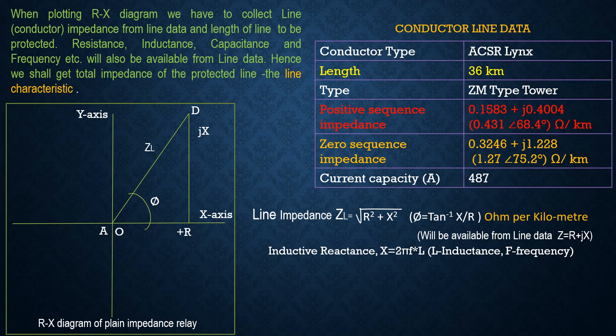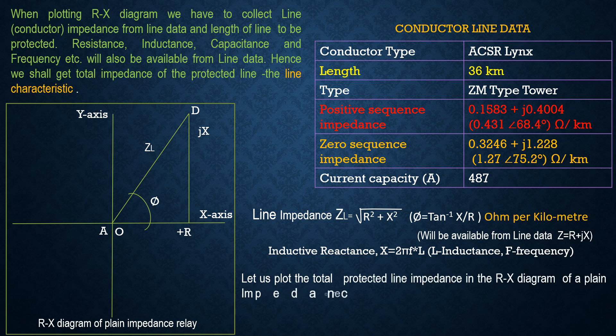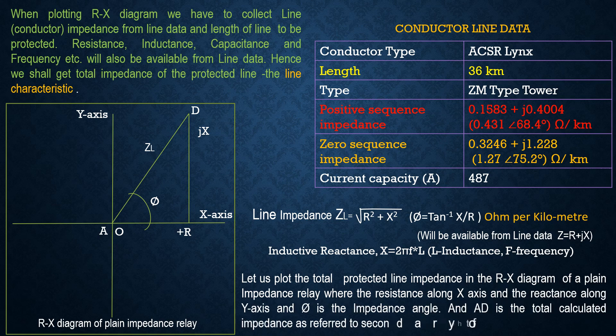Total impedance is calculated for the 36 km line length based on positive sequence impedance for phase-to-phase faults, and on zero sequence impedance for earth faults. The relay calculates everything based on data input. We then plot the total protected line impedance on the RX diagram of a plane impedance relay, with resistance along the X-axis, reactance along the Y-axis, φ as the impedance angle, and AD as the total calculated impedance referred to the secondary of the protected line.